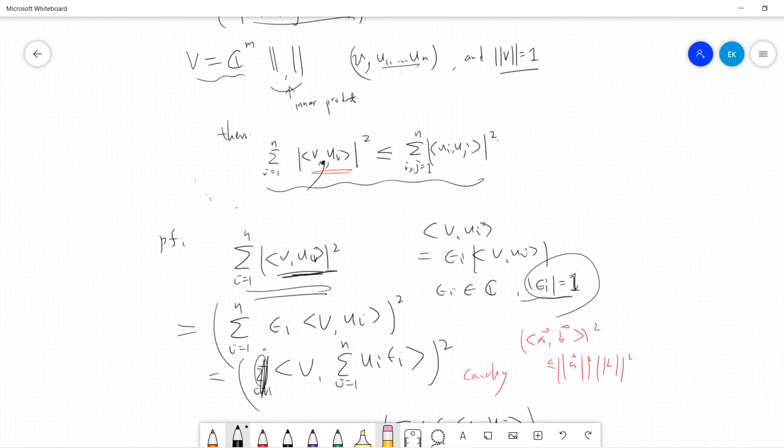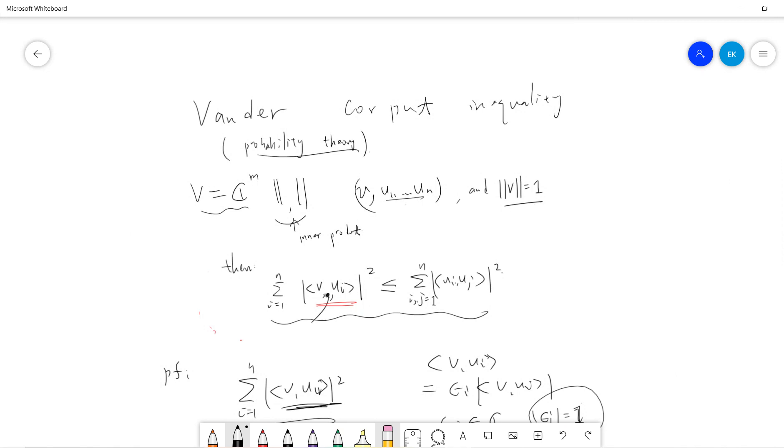So this is the famous Vandercorput inequality. So I found these inequalities at the Terence Tao blog. So it's amazing. So I gave a proof. I will see you guys in the next video. Be sure to subscribe to my channel. Thanks.